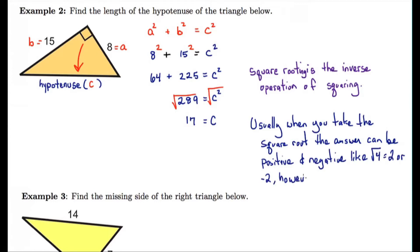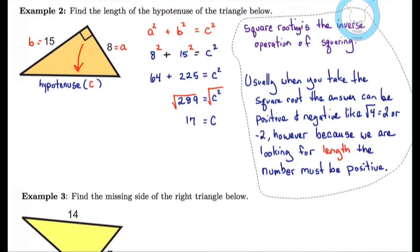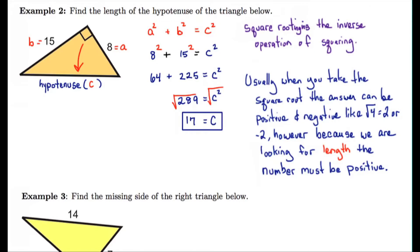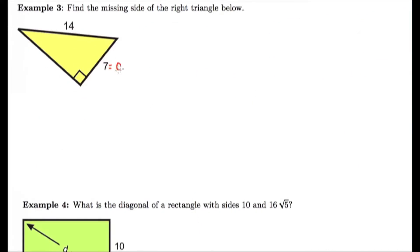Usually when you take the square root of a number, the answer can be positive and negative. Like square root of four is two or negative two. However, because we're looking for lengths here, the number must be positive. So we're always going to deal with positive numbers for these problems.